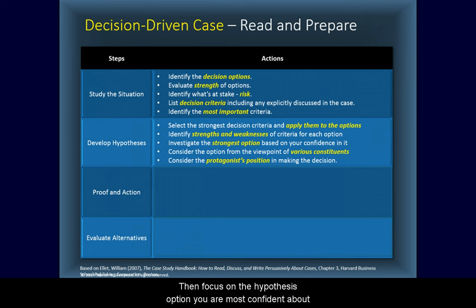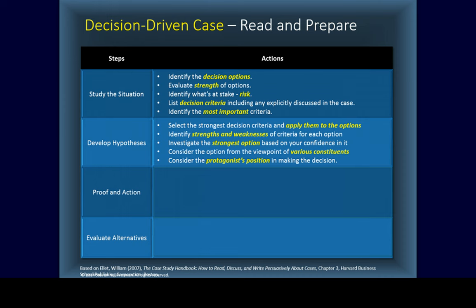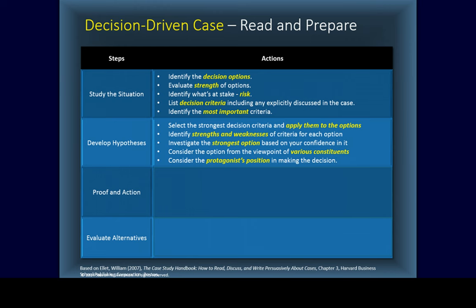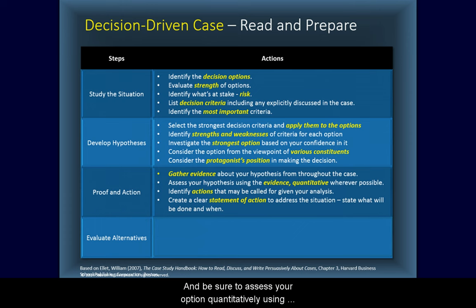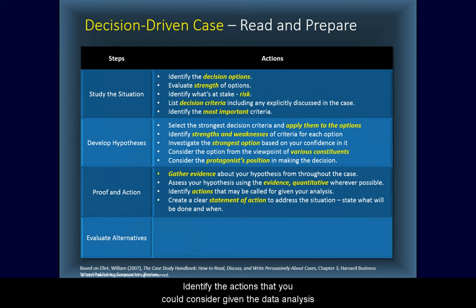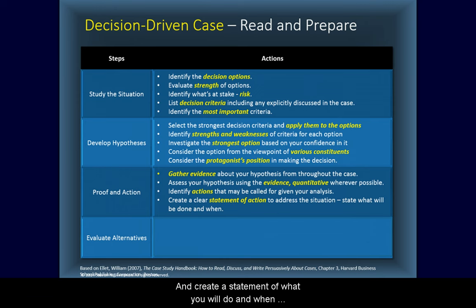Then focus on the hypothesis option you are most confident about. Consider that option from multiple viewpoints. And consider the protagonist's role and the implications of their making the decision. Next, you move to proof and action. Gather evidence about your top hypothesis. Be sure to assess your option quantitatively using the data in the case and your own analysis. Identify the actions you could consider given the data analysis, and create a statement of what you will do and when you will do it.